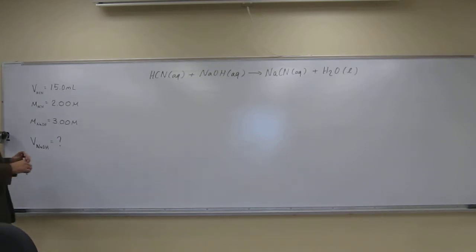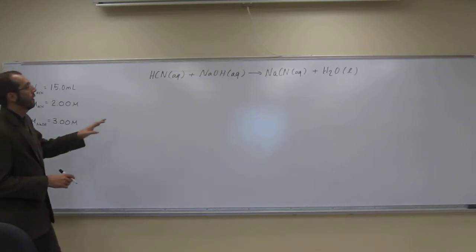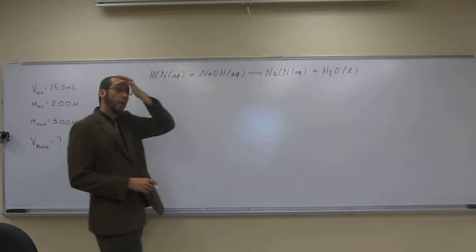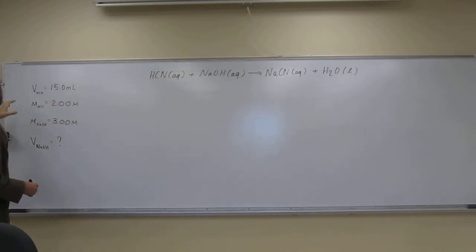So how do we do that? The first thing we have to do is we're going to eventually need to use this reaction equation to do a mole-to-mole ratio. The first thing we need to do is figure out how many moles of HCN do we have?